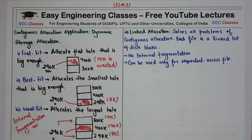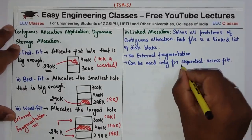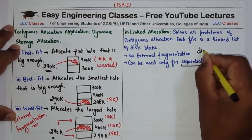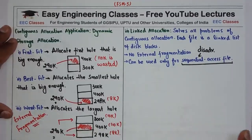Next we have linked allocation, which solves all the problems of contiguous allocation. In linked allocation, each file is a linked list of disk blocks, so it is not necessary to have contiguous addresses. Blocks can be scattered, and each block is linked to the next. There is no external fragmentation, but the disadvantage is that it can only be used for sequential access — this is the biggest disadvantage of linked allocation.